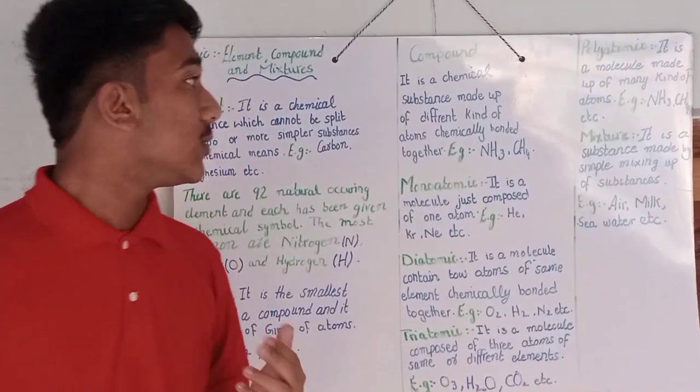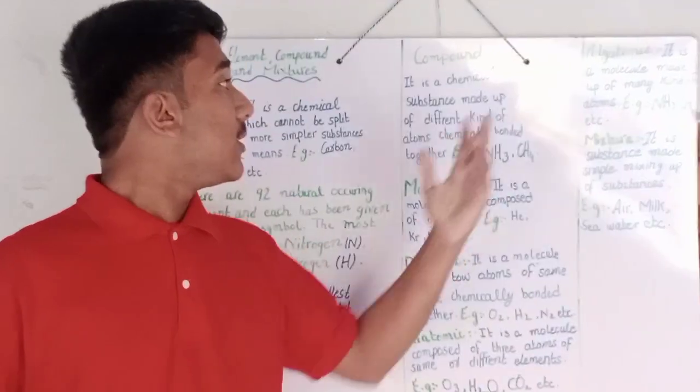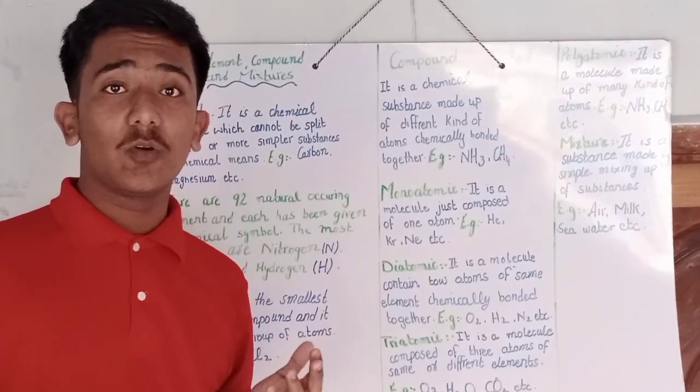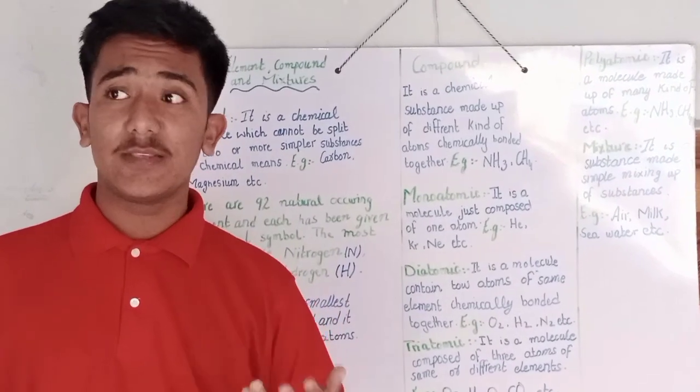Polyatomic molecules. It is a molecule made up of many kinds of atoms. For example, NH3, CH4, C6H12O6, and etc.